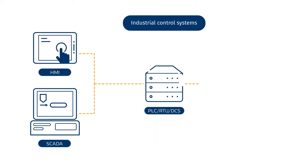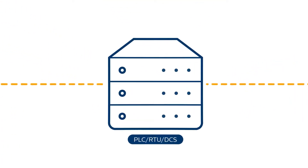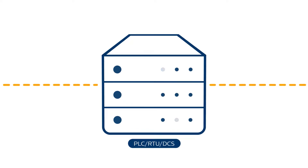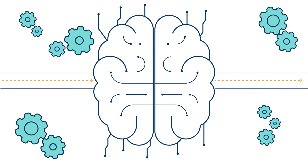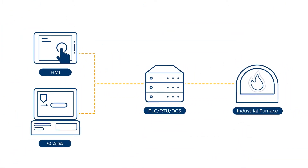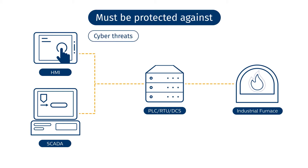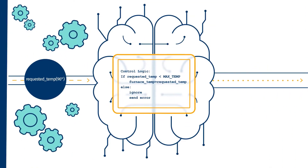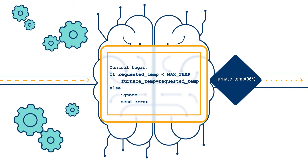At the heart of all OT networks reside the industrial controllers. These critical devices are far more than simple proxies between human operators and industrial devices. Controllers are in fact the brains of all complex industrial networks, most of which were designed decades ago with few protections and sometimes none at all. Therefore, industrial controllers must be protected against cyber threats and unauthorized changes.